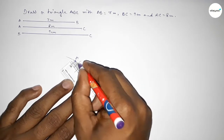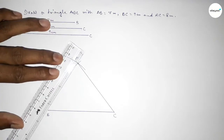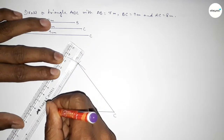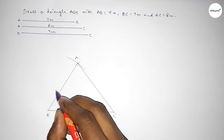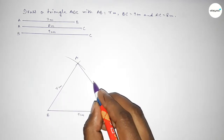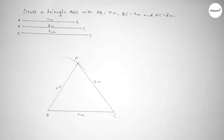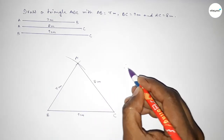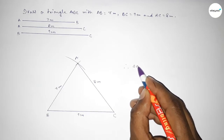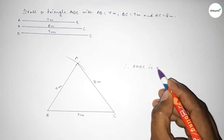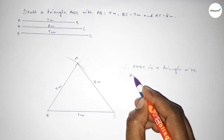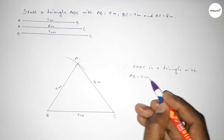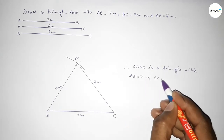Now joining A and C, then joining A and B. So this line BC is 9 centimeter, AB is 7 centimeter, and AC is 8 centimeter. Therefore triangle ABC is constructed.